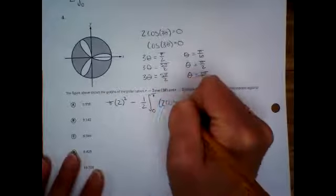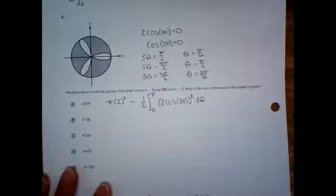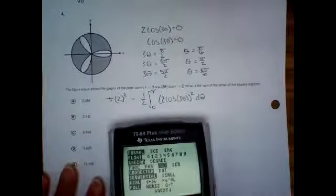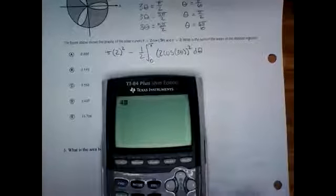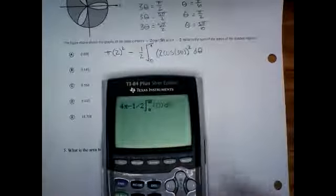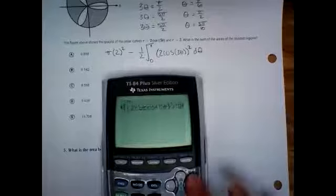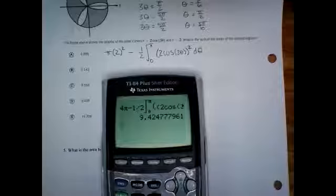This is going to be the function squared d theta. So we're doing the whole circle minus that part, and we do have to actually type this one in. Make sure you're in polar mode so it comes up as theta. So it'd be four pi minus one half math integral zero to pi of two cosine three theta squared d theta. That gives 9.424, which rounds to 9.425, so the answer is D.